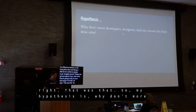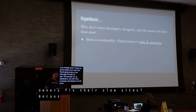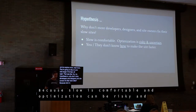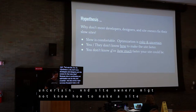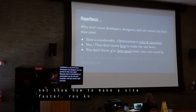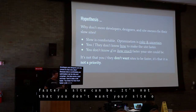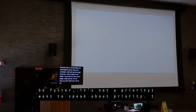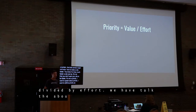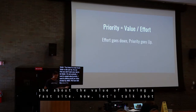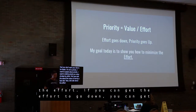My hypothesis is: why don't more developers, designers, and site owners fix their slow sites? Partly because slow is comfortable and optimization can be risky and uncertain. Site owners might not know how to make a site faster, or how much faster it could be. It's not that you don't want your site to be faster — it's that it's not a priority. I want to define priority as value divided by effort. We've already talked about the value. If you can get the effort to go down, your priority will go up. My goal today is to show you how to minimize that effort.